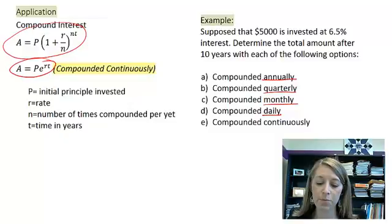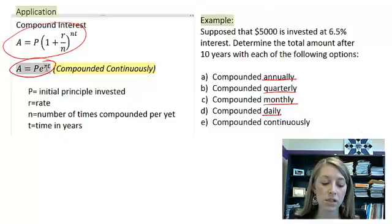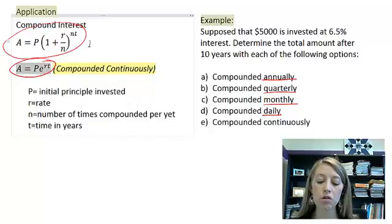So we have an example here. You should know all of the information that you need to know. The only thing is in Part E you're going to be using this formula here, and every other part you're going to be using your typical compound interest formula. Plug in the information that you know here, and you can figure out the amount at the end in every single one of these situations. So pause the video and see what amounts you come up with.